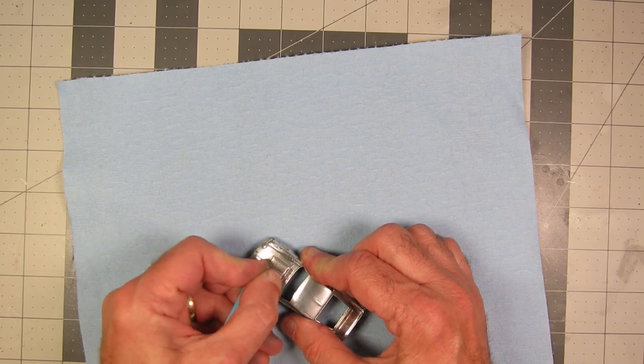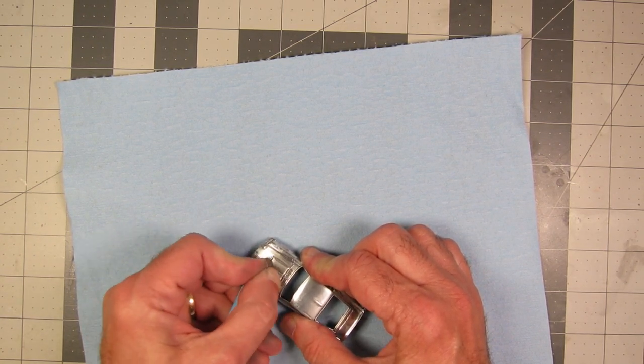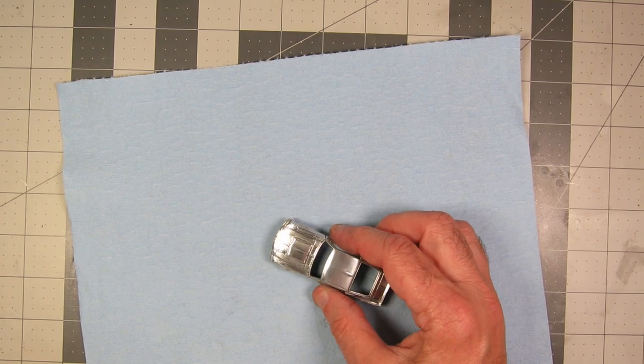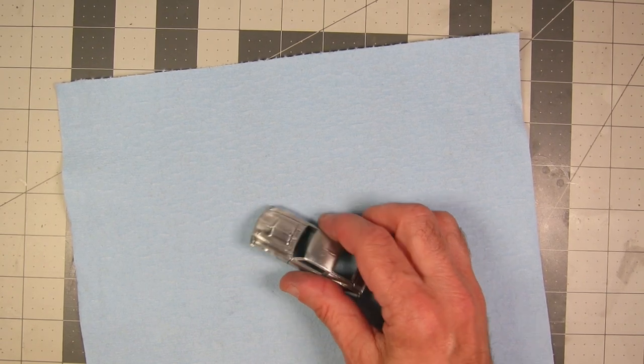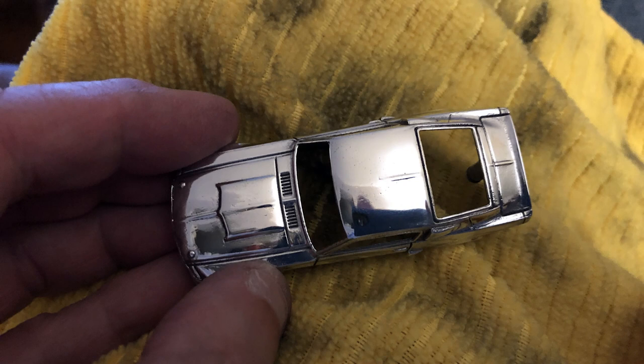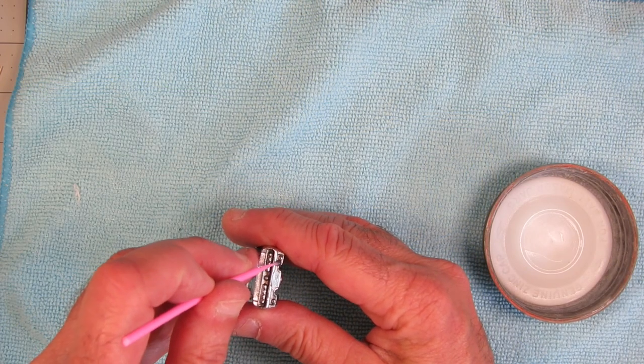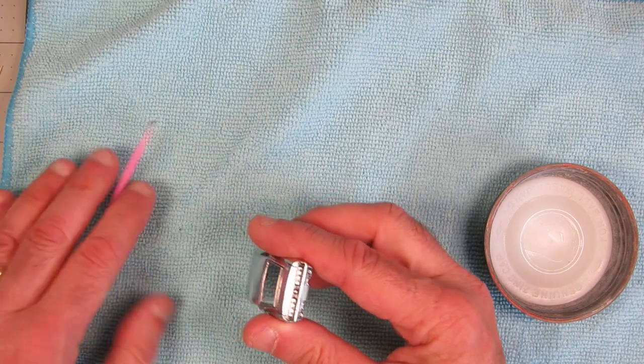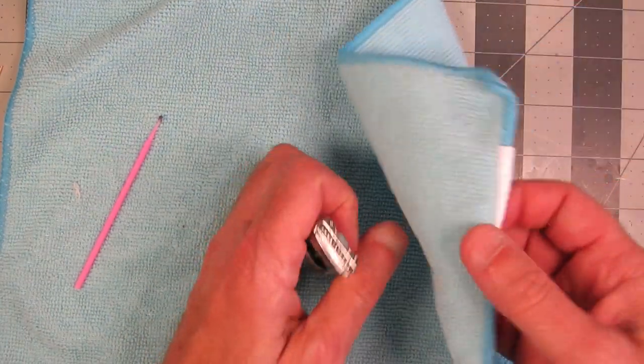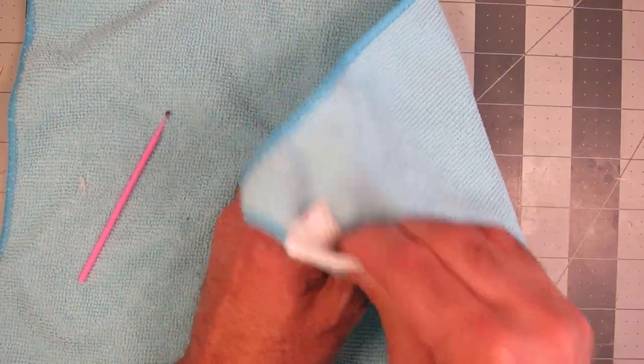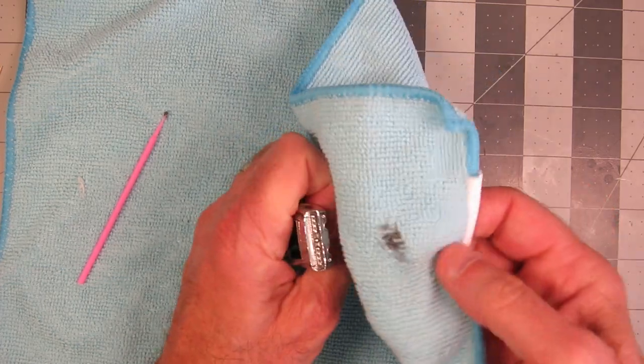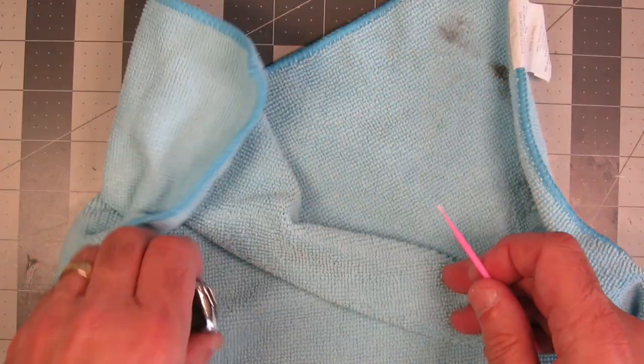It seemed like every panel on the body had something. There were no just full flat sides, flat top. Everything had a little raised area. There you see it after the first polish, and it's looking pretty good at that point. And that might have been the second polish. I can't keep track of which one it was. I've polished this thing several times.